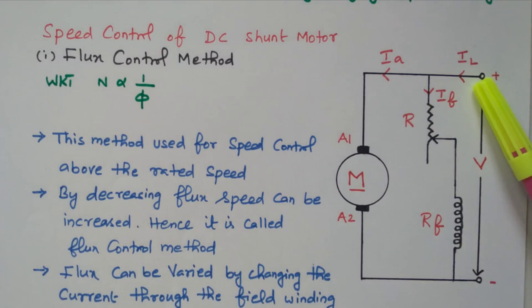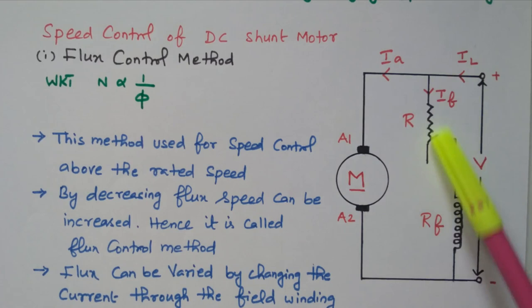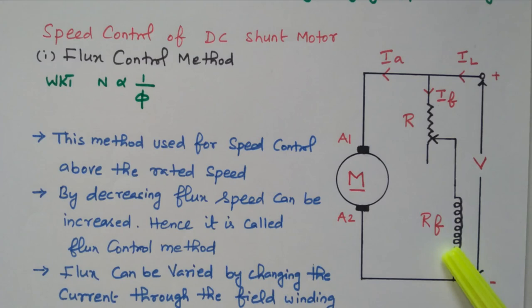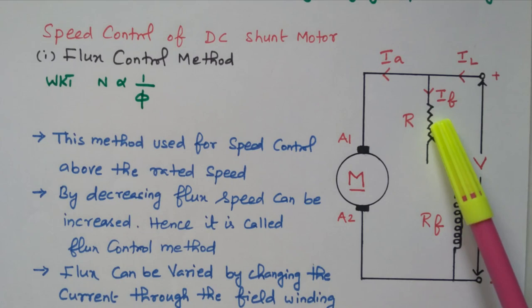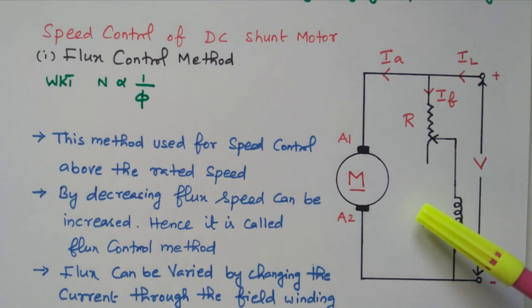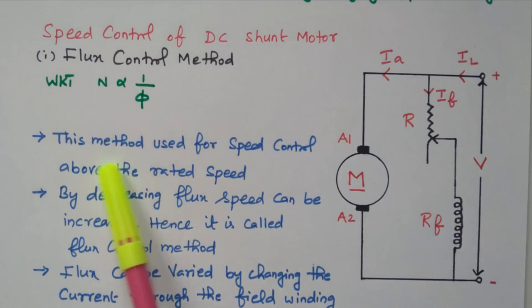The current is divided into armature current and field current. At the maximum resistance position, only a minimum value of current will flow. If the current is minimum, the flux is also minimum. If the flux is minimum, the speed will be maximum. If you reduce the resistance, more current will flow, more flux is produced, and speed will reduce. So by varying this rheostat we can vary the current through the field winding, thereby varying the flux and thus varying the speed of the DC shunt motor.